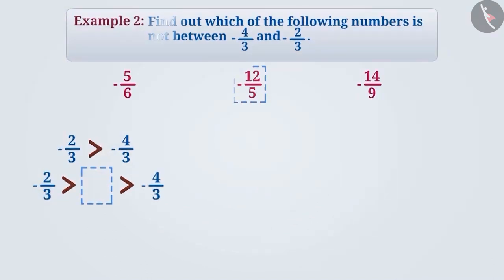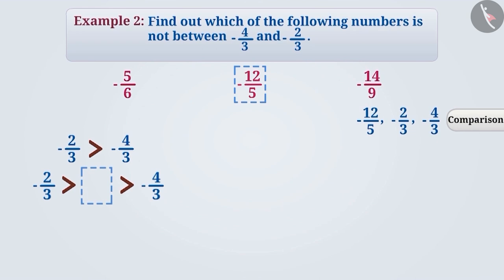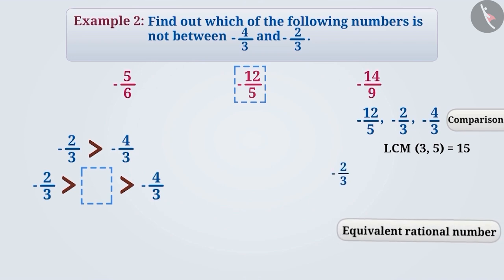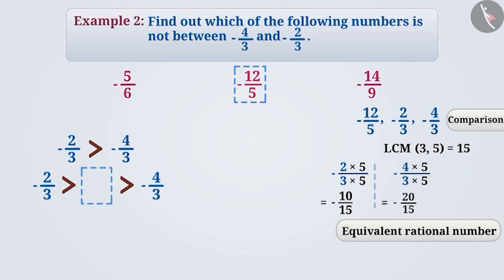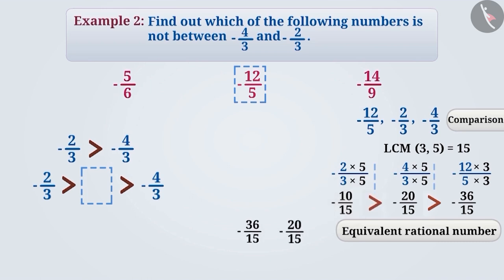Now let's talk about minus 12 by 5. In order to compare these three rational numbers, we have to make their denominators equal. The LCM of 3 and 5 is 15. An equivalent rational number of minus 2 by 3 is minus 10 by 15, of minus 4 by 3 is minus 20 by 15, and of minus 12 by 5 is minus 36 by 15. Since minus 36 by 15 is smaller than minus 20 by 15, minus 36 by 15 won't come between minus 20 by 15 and minus 10 by 15. That is, minus 12 by 5 is not a rational number between minus 4 by 3 and minus 2 by 3.